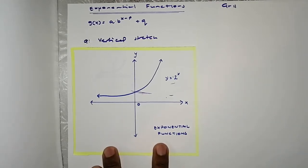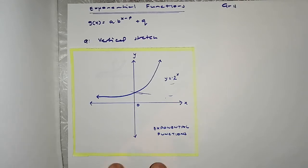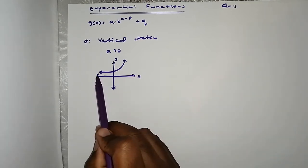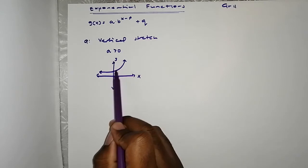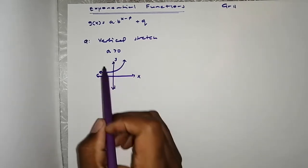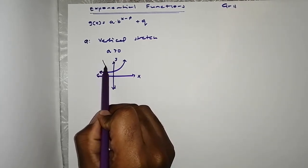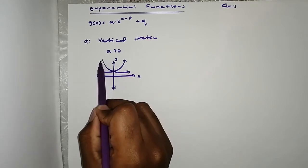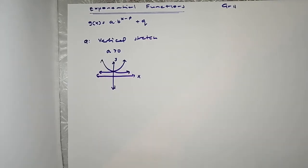First of all, let us look at A. A is the vertical stretch of the graph. A actually affects the shape of the graph — how the graph will look. When A is positive, our graph will be like this, or it can also be like this.